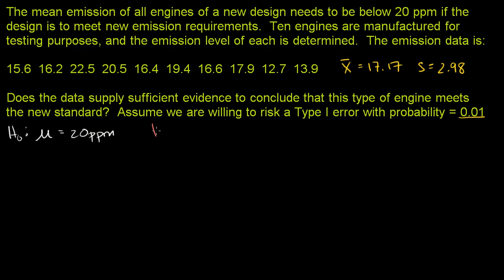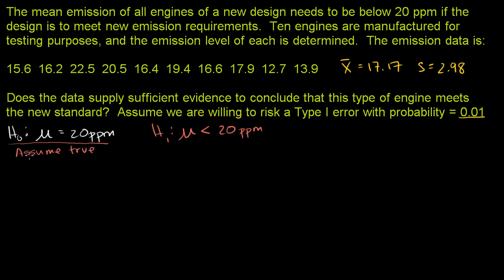Our alternative hypothesis is that we do meet the standard — that the true mean for our new engines is below 20 parts per million. To see if the data we have is sufficient, we assume the null hypothesis is true. If the probability of getting our observed sample mean is less than 1% given the null hypothesis, then we will reject the null hypothesis.